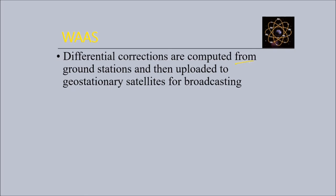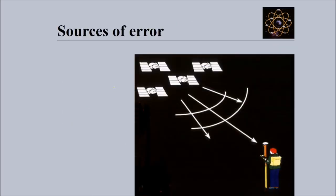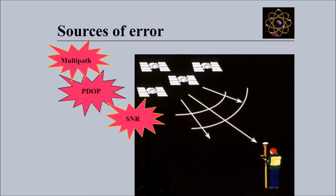Differential corrections are computed from ground stations and then uploaded to geostationary satellites for broadcasting. WAAS-enabled GPS receivers automatically use these correction data to improve position accuracy, because the positions of certain locations are exactly known. When data is coming you can know what error is there, and that error is sent so it can be utilized by GPS receivers.